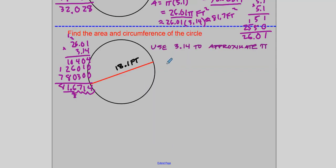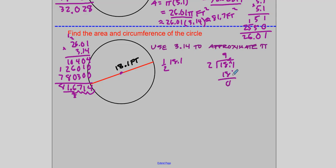The second example has a diameter of 18.1 feet. I'm going to take half the diameter to get the radius. Half of 18.1: divide 2 into 18.1 — bring the decimal point straight up; 2 goes into 18 nine times, 9 times 2 is 18; remainder 0, bring down 1; 2 doesn't go into 1, that's 0; bring down a 0, 2 goes into 10 five times. So the radius is 9.05 feet.